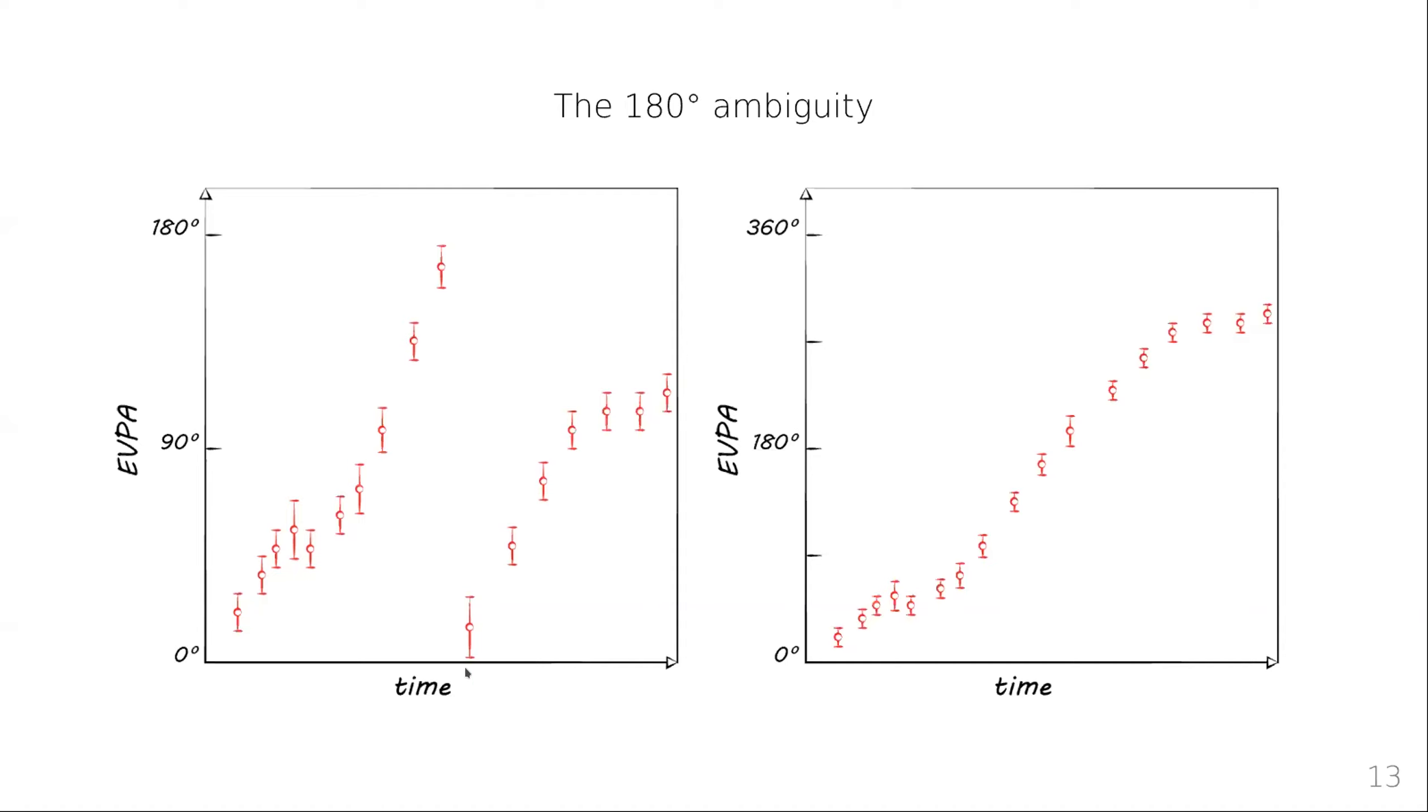We can measure EVPAs at different points in time in an interval of 180 degrees. What we would usually do is we take those and shift them up by 180 degrees to end up with this smooth transition of the EVPA.